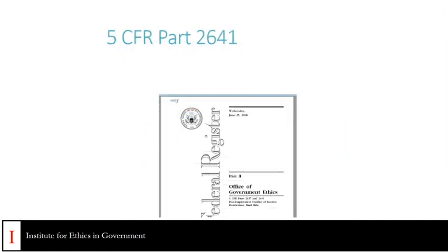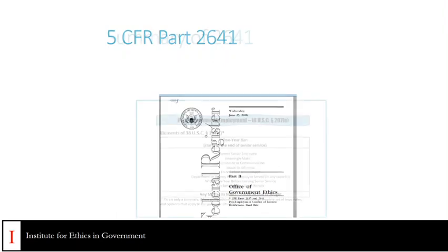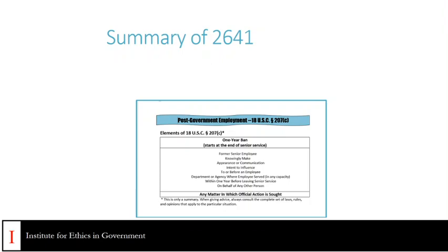We've given you a copy of 5 CFR Part 2641 — specifically the Federal Register version of the final rule — because we will be making reference to various parts of the preamble where additional interpretive guidance is found. We've also given you a summary of the 2641 provisions that deal with 18 U.S.C. Section 207C. This is not a legal document; it is meant to be used as a reference tool or job aid.